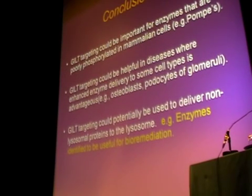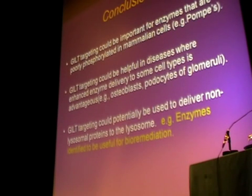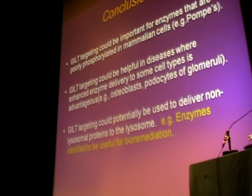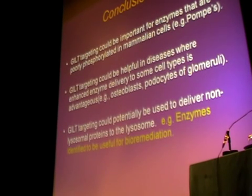The conclusions from the GILT work are that GILT targeting could be important for enzymes that are poorly phosphorylated in mammalian cells, for example, Pompe's disease. GILT targeting could be helpful when enhanced enzyme delivery to some cell types is advantageous, such as the osteoblasts, the podocytes, and the glomeruli. GILT targeting could potentially be used to deliver non-lysosomal proteins to the lysosome, for example, enzymes identified to be useful for remediation.